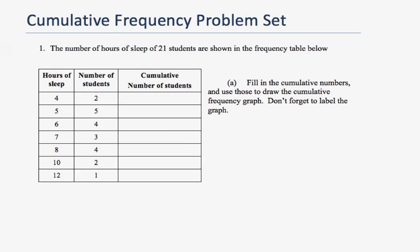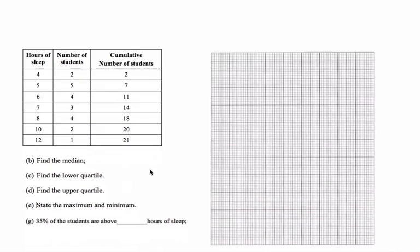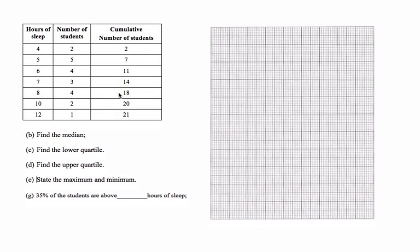Okay, so now, the next part says, oh, I've already done the cumulative here. I think our numbers were right. So now, we want to graph it. And so I have a graph here. On the bottom of my axis, I'm going to start at four and five, six, seven, eight, nine, ten, eleven, and twelve.